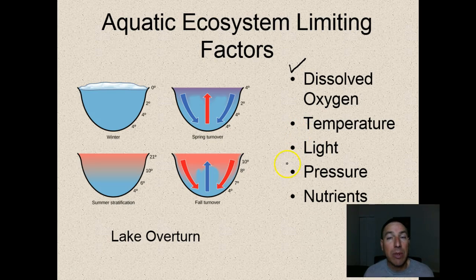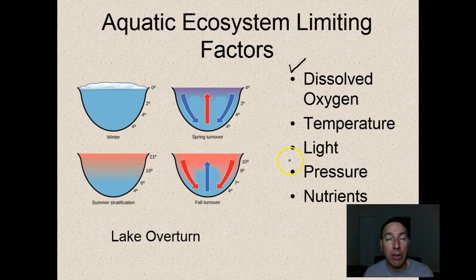Pressure is another limiting factor. Most aquatic organisms don't have air spaces and don't really feel pressure. However, organisms that do have air spaces - such as mammals, some bony fish, and humans - have problems with pressure. The last limiting factor is nutrients. Open ocean or open water areas often have low amounts of nutrients and therefore lack the primary productivity that other places have, resulting in relatively little life.